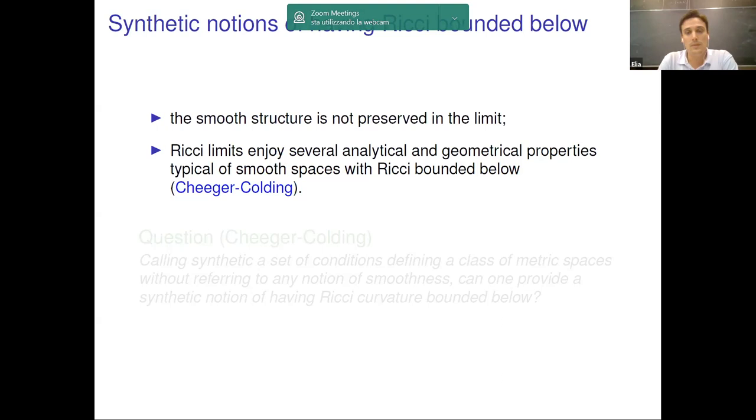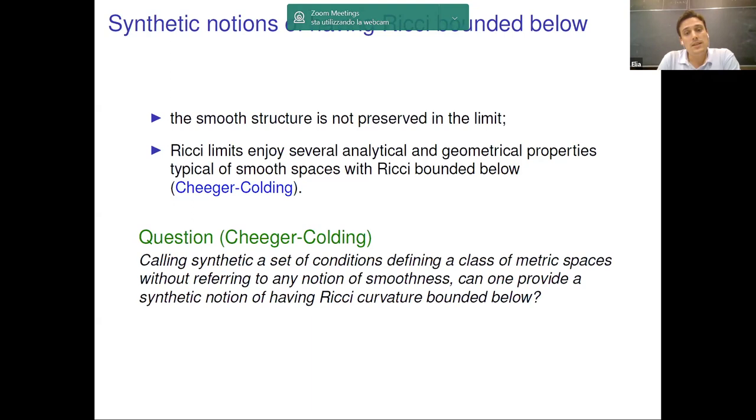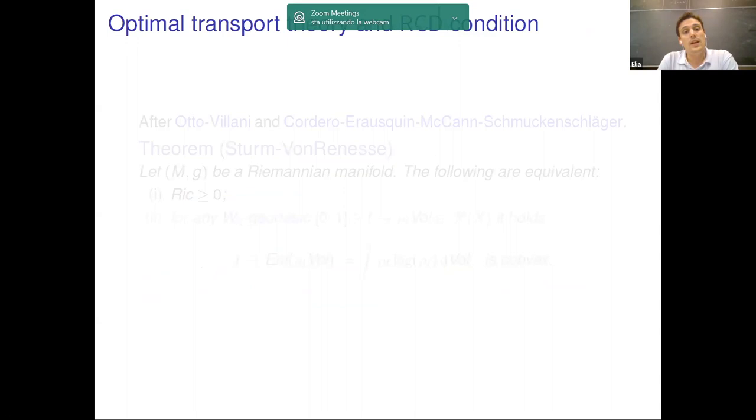And this has given rise to a very natural question that has been explicitly written in one of the fundamental papers by Cheeger-Colding. This question asks whether or not there exists a synthetic notion of Ricci curvature bounded from below for metric measure spaces which do not rely on a sequence of smooth spaces converging to our metric space. And the answer to this question has been given quite recently and it has been provided by the so-called RCD theory, which is based on tools coming from the optimal transport theory.